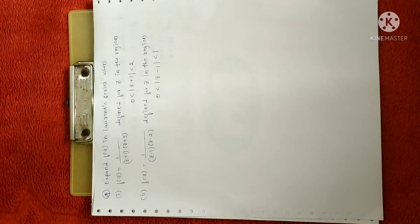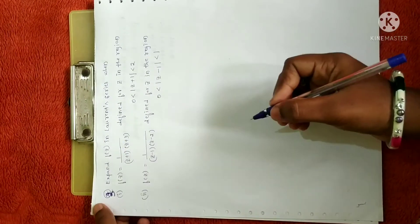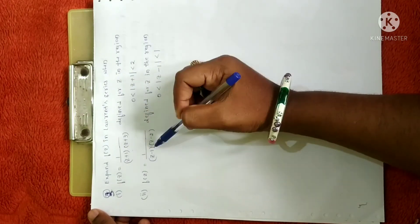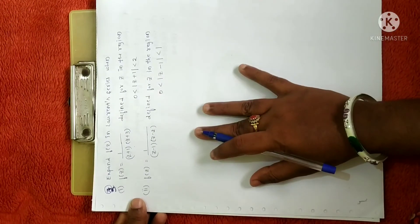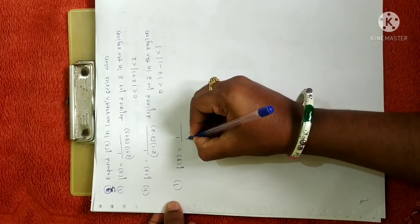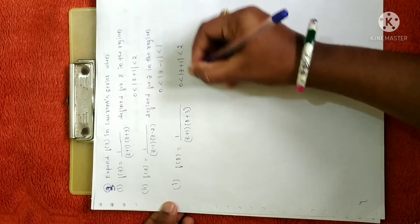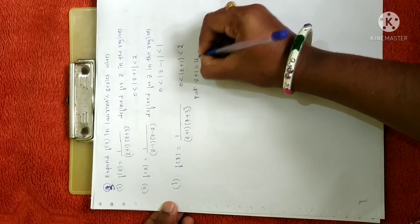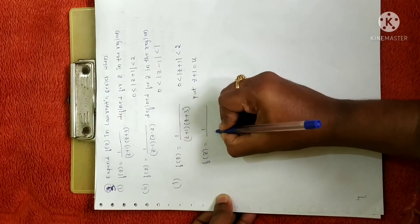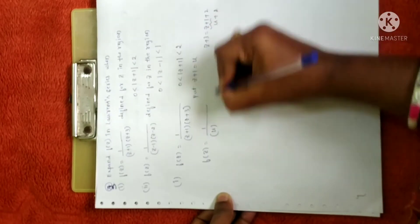Now let me solve one more problem — the third problem. Expand f(z) in a Laurent series where f(z) = 1 / [(z+1)(z+3)], with region 0 < |z+1| < 2. Let u = z + 1, so f(z) = 1 / [u · (z+3)]. Since z + 3 = (z+1) + 2 = u + 2, we get f(z) = 1 / [u(u+2)]. Taking 2 as common: f(z) = 1 / [2u(u/2 + 1)], valid when |u/2| = |z+1|/2 < 1.